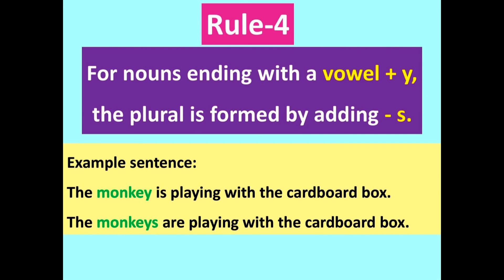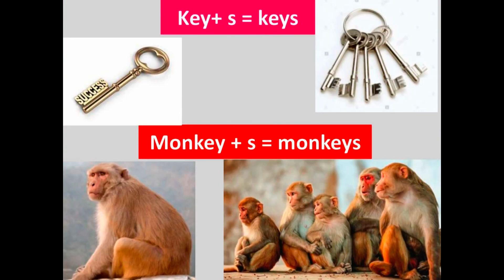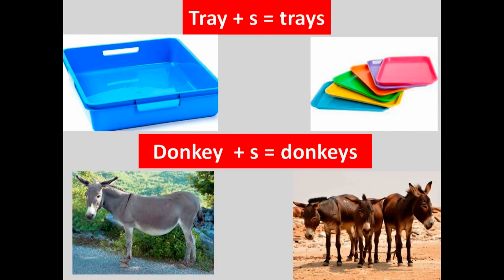Rule number four: for nouns ending with a vowel plus -y, the plural is formed by adding -s. Example sentence: 'The monkey is playing with the cardboard box.' becomes 'The monkeys are playing with the cardboard box.' We added -s to monkey to change into plural. More examples: key → keys, monkey → monkeys, tray → trays, donkey → donkeys.